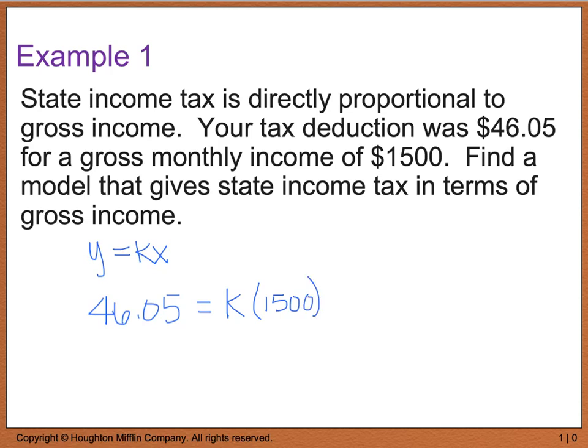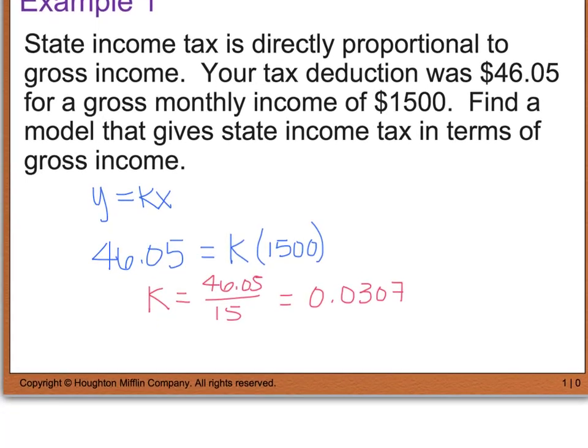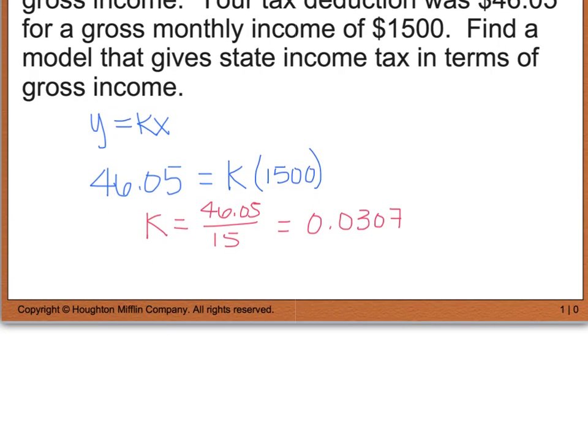So now what you'll see is we have to solve for k. When we simplify this, $46.05 divided by $1,500 is equal to 0.0307. So now this is our k value. In order to write a model, which was asked right up here, we need to rewrite this in an equation format. So now that we've solved for k, we're going to have y equals 0.0307x. So now I can plug in any monthly income for my x value and come up with the amount of tax I'm going to have to pay.